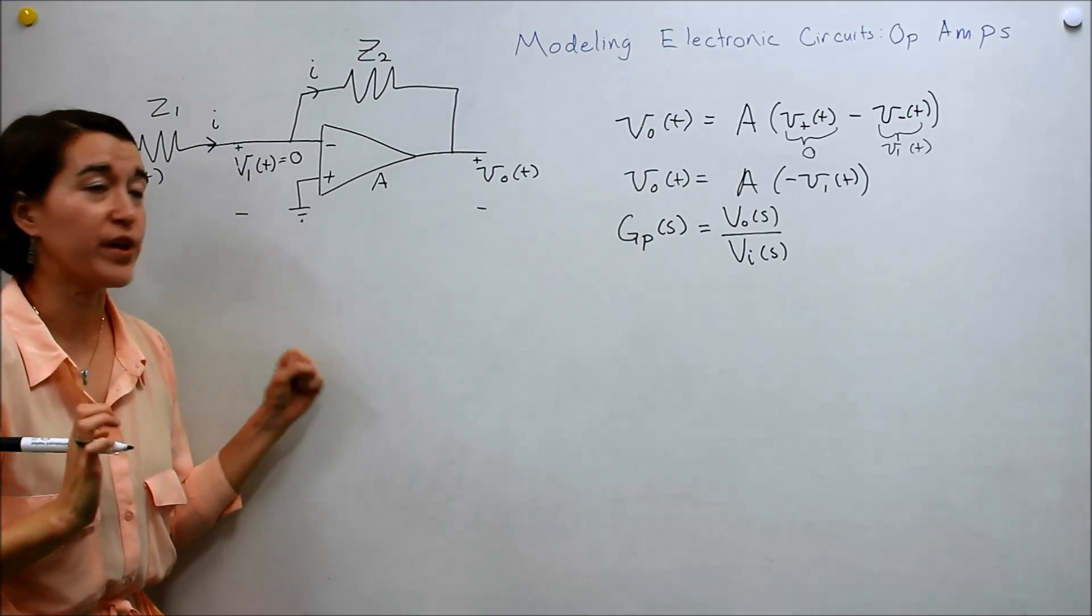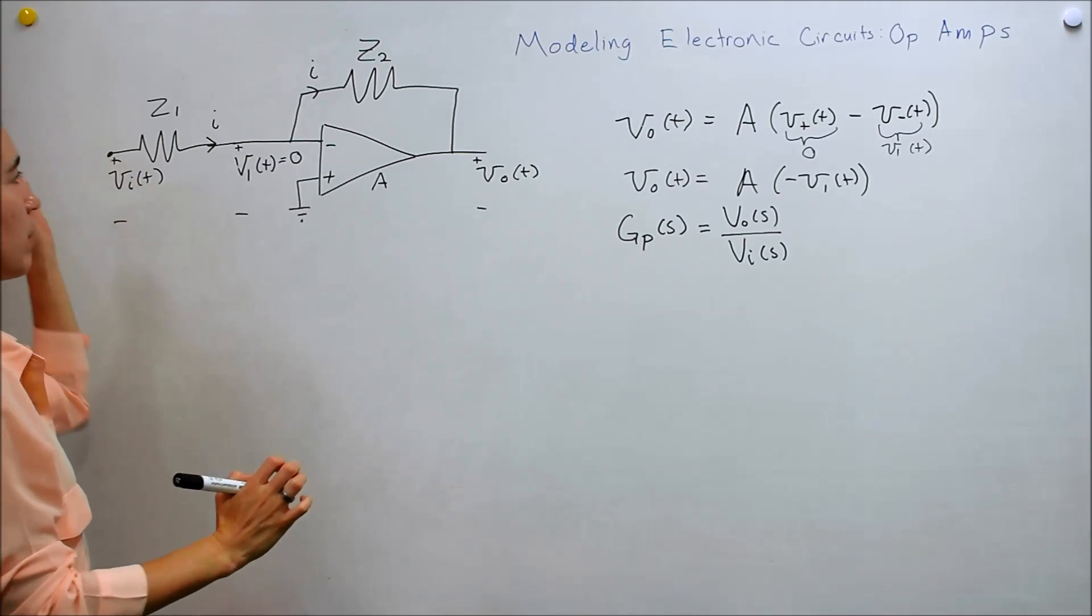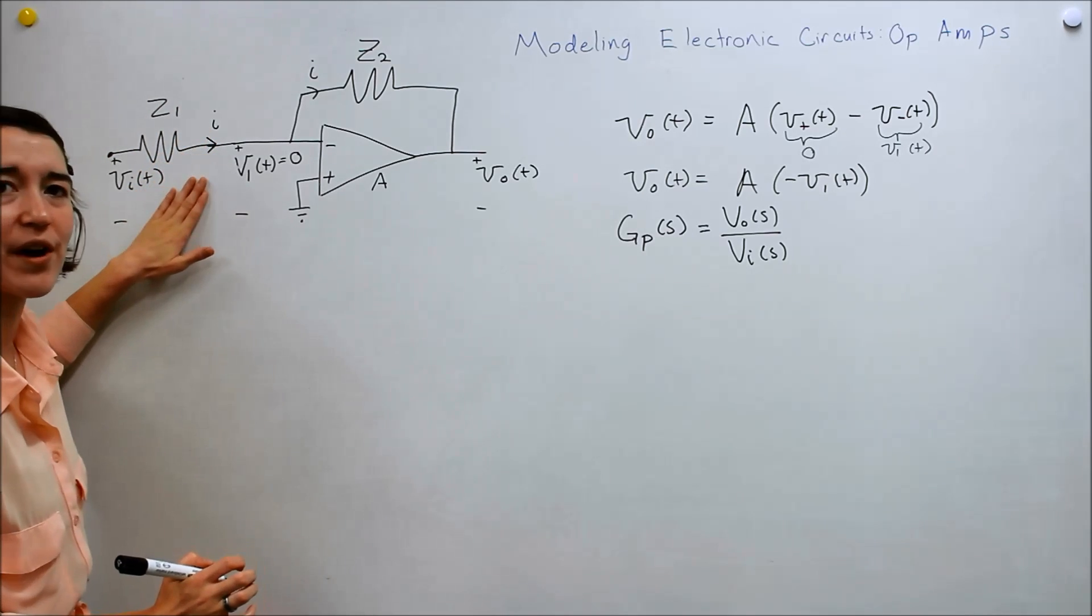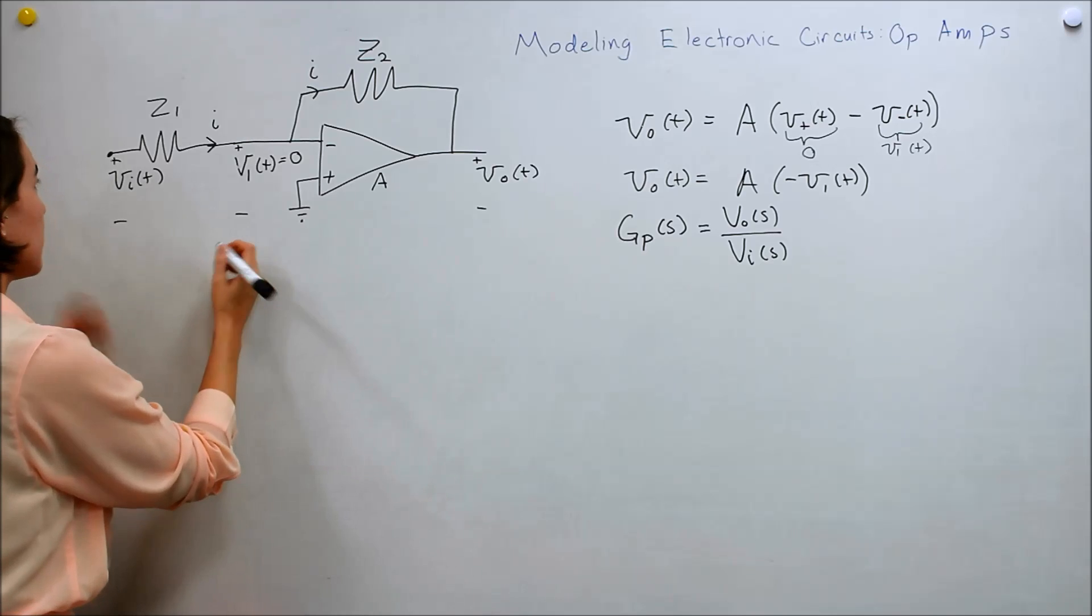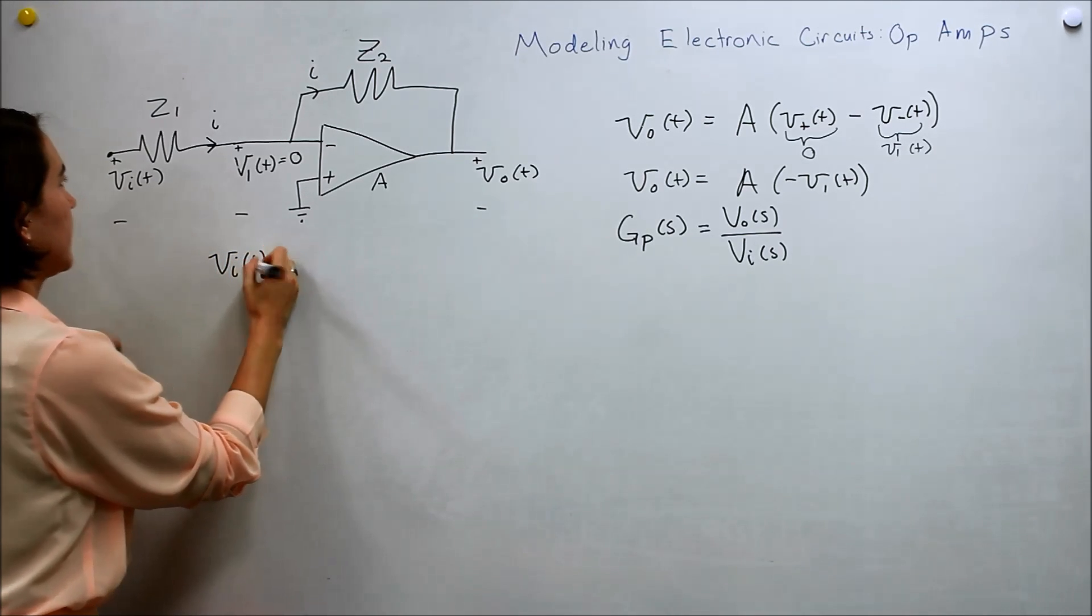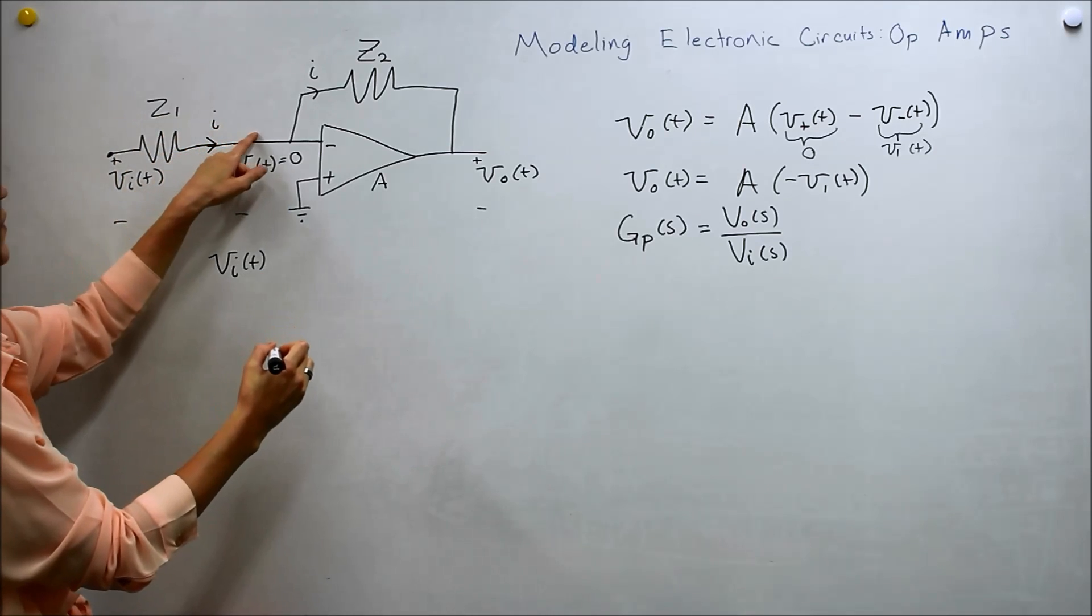Again, we start with what we know. We know Ohm's law. So V equals IR. So let's do V equals IR for this first impedance. So V we know is the input voltage. And we subtract this voltage,